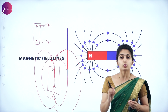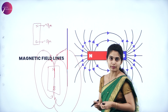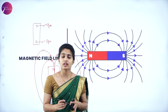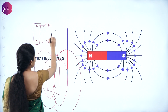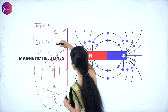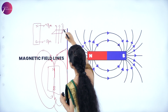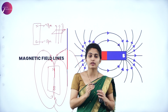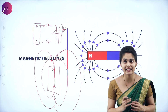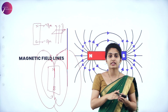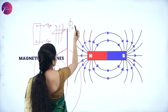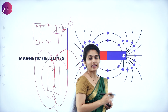The materials attracted by the magnet are called magnetic materials — for example, iron, steel, nickel, cobalt, etc. Magnetic flux is defined as the number of magnetic field lines passing perpendicular to the plane of any surface area. So the number of field lines passing perpendicular to a given surface gives you the magnetic flux, denoted B.